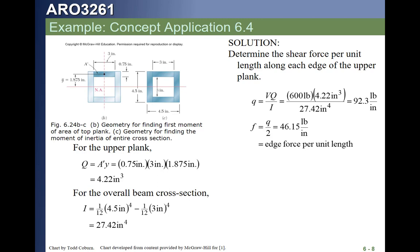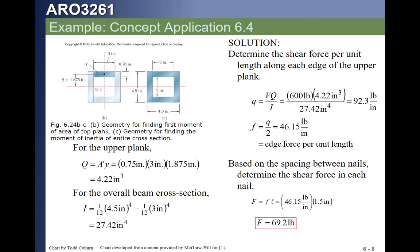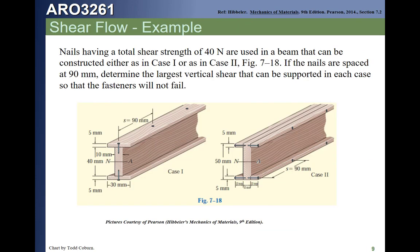That shear flow, 92.3, acts on both lines of nails. The shear flow that's called F here is acting on each line of nails. Therefore, when you multiply by the spacing, that will give you the force per nail, which this text is calling F. We would generally call that capital S for a shear force acting in the nails.